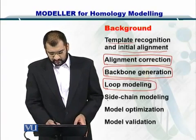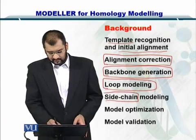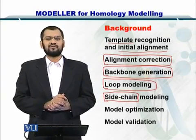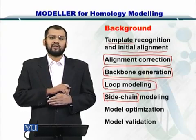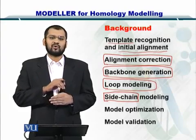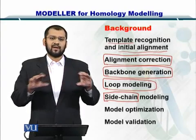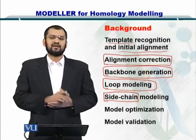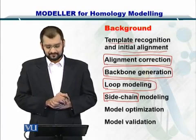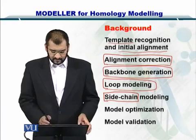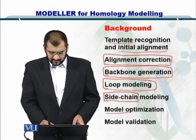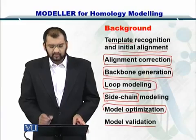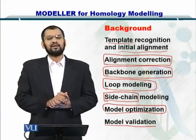In the next step, you put the side chains — that is, the R groups that are attached to the amino acids — onto the backbone. Once you have placed all the side chains, you have a backbone with all the R groups attached in a reasonable conformation. The model was then optimized and validated using experimental data.